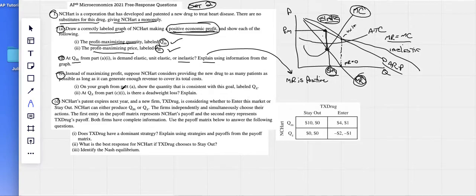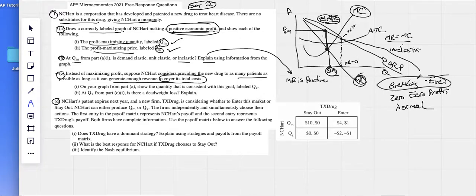Instead of maximizing profits, suppose Hart considers providing new drug to as many patients as possible, as long as it can generate enough revenue to cover its total cost. Well, if you're covering your total cost, you are what we call breaking even. If you're breaking even, you're making zero economic profit. All of this we need to know. Also called a normal profit. Break even is where your price equals your ATC.